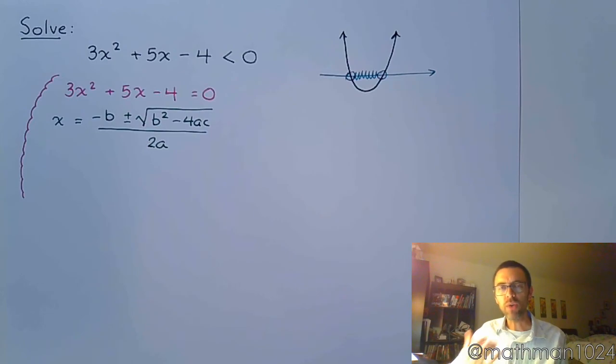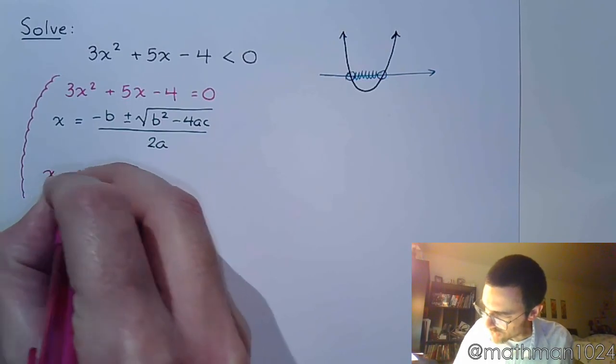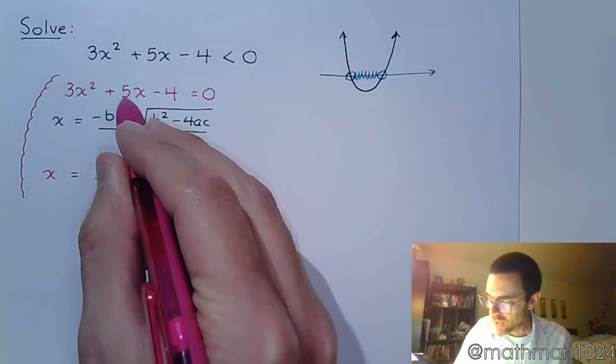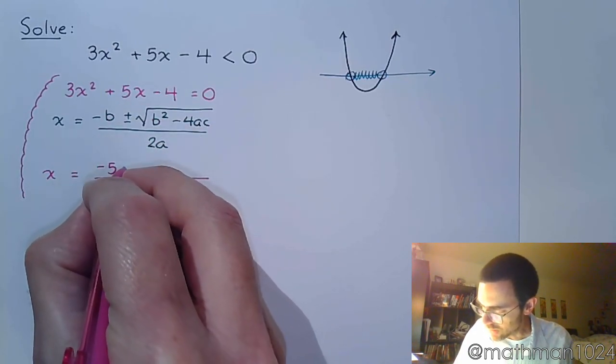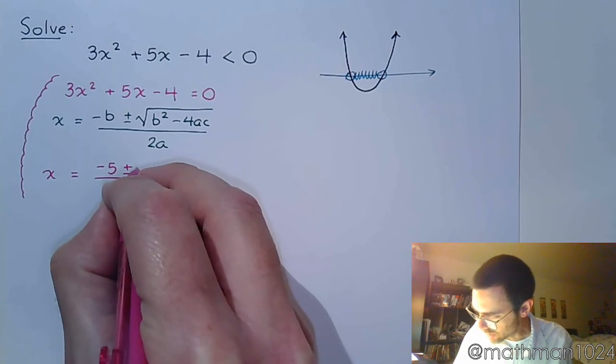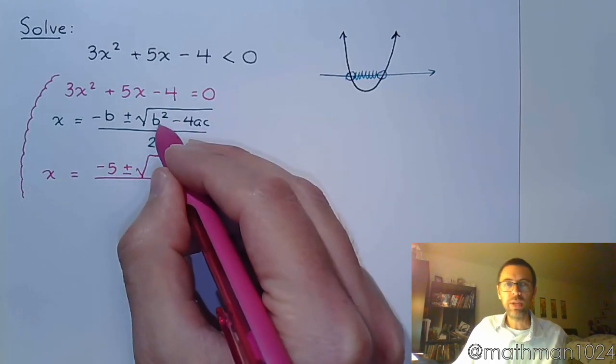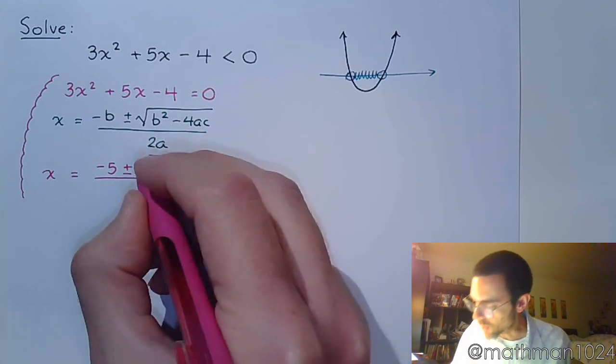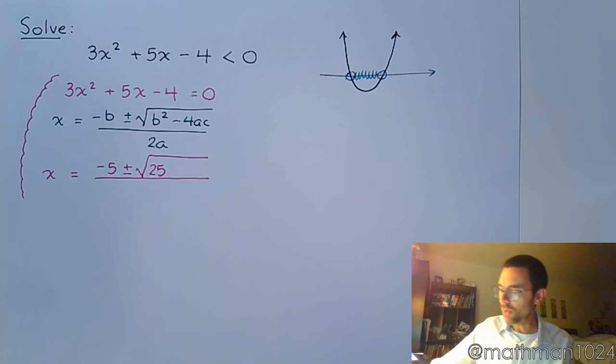All right, so make sure you correctly identify your A, B, and C and plug them into the formula correctly. So X is equal to, big fraction, B is 5, so negative B is negative 5, plus or minus. We have the square root, B squared, well B is 5, so B squared is 25, minus 4AC.